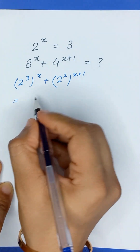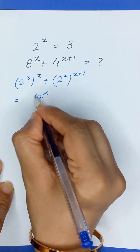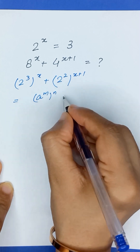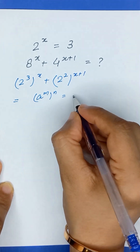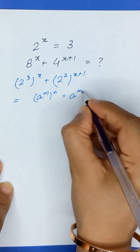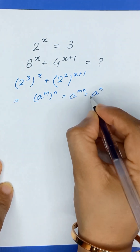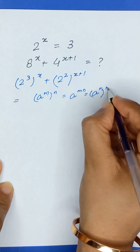As we know, a to the power m to the power n is equal to a to the power mn, and it is also equal to a to the power n to the power m.